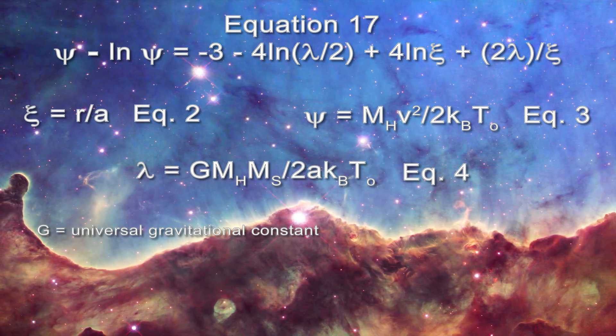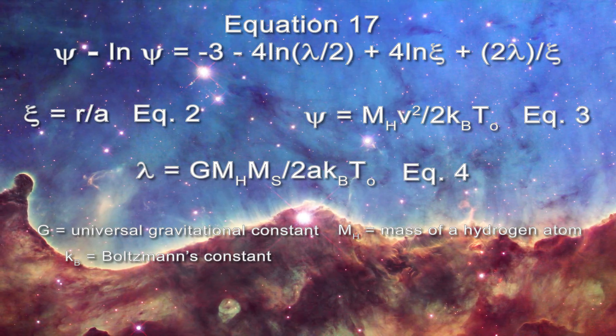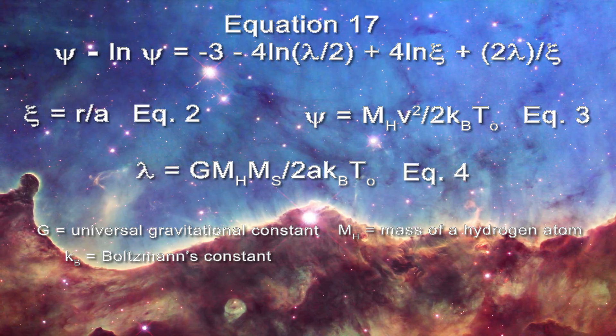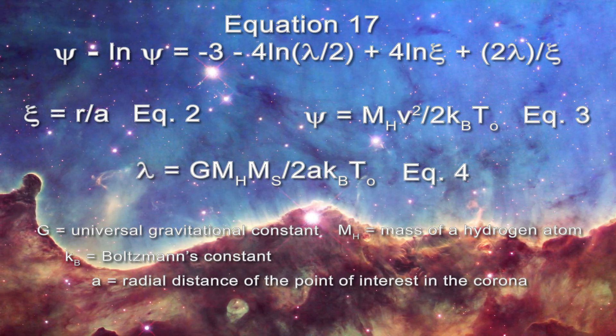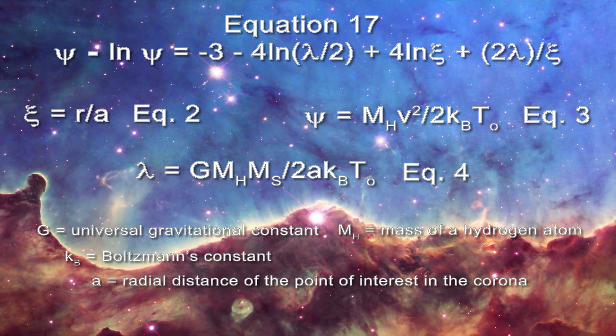G, m sub h and k sub b correspond to the universal gravitational constant, the mass of the hydrogen atom and Boltzmann's constant respectively. Little a is the radial distance of the point of interest in the corona relative to the center of the sun.